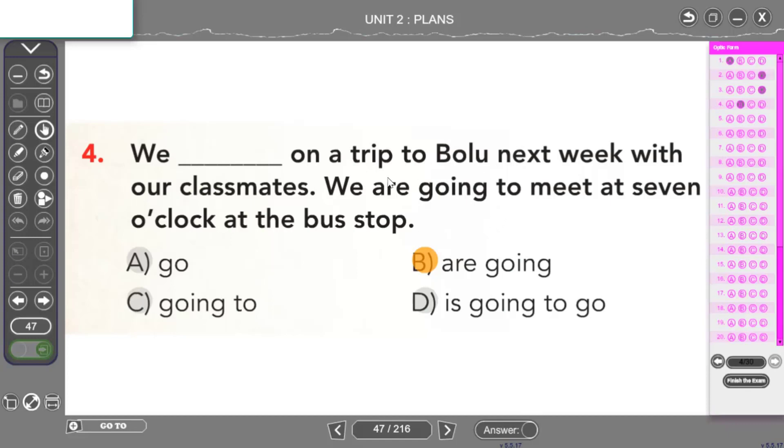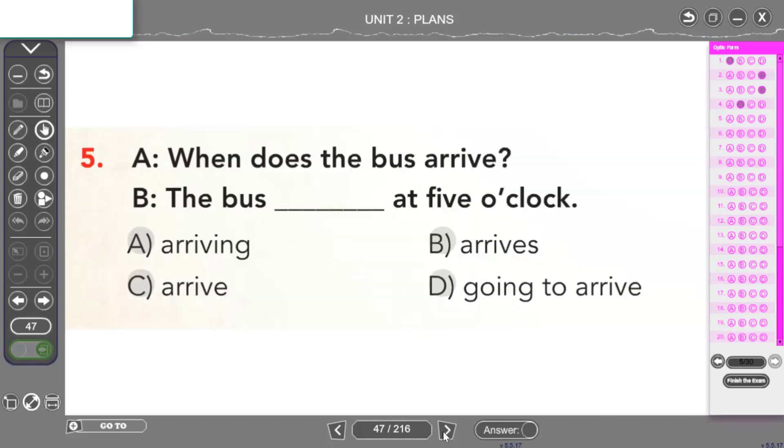When does the bus arrive? Otobüs saat kaçta varacak? şeklinde bir soru sormuşuz. Hatırlayalım. Film seansları, otobüs, tren kalkış ve varış saatleri, ders başlangıç ve bitiş saatleri gibi belirli bir süre içerisinde düzenli olarak devam eden planlı ve programlı durumlardan bahsederken simple present tense gelecek zaman anlamı katmak için kullanılıyordu. Burada da buna bir örneğimiz var. When does the bus arrive? Burada present tense cümle kurmuş ama aslında yine bir future gelecek zaman anlamı katmış cümleye. Otobüsün ne zaman varacağını soruyor. Yine cevabımız da present tense'de olacak. Yani yapı olarak present tense'de olacak. Anlam olarak da gelecek zamanı anlatacak. Ne diyeceğim yani? The bus arrives at 5 o'clock. Otobüs saat 5'te varacak.